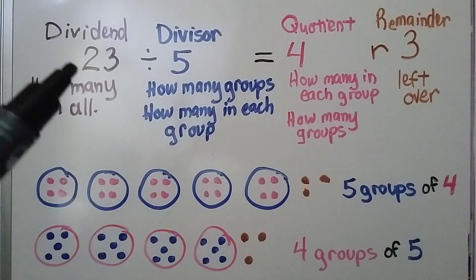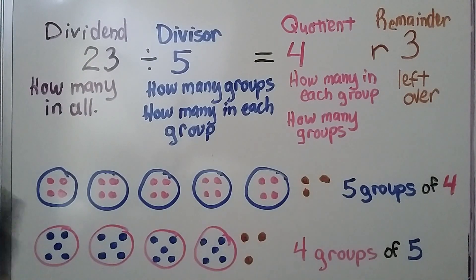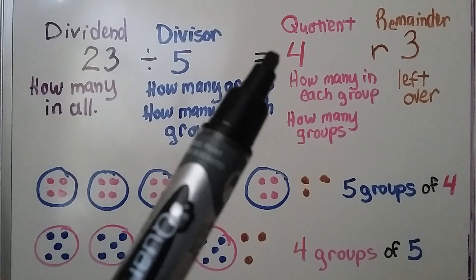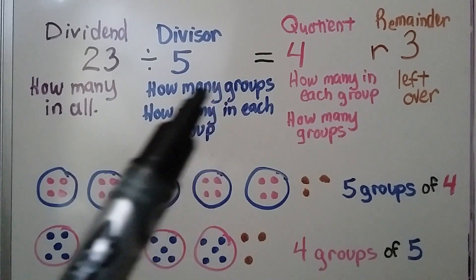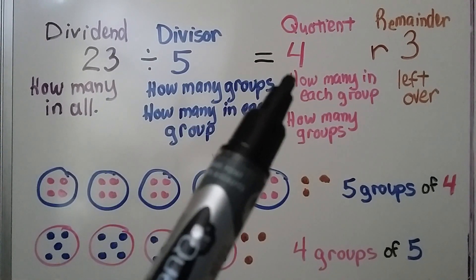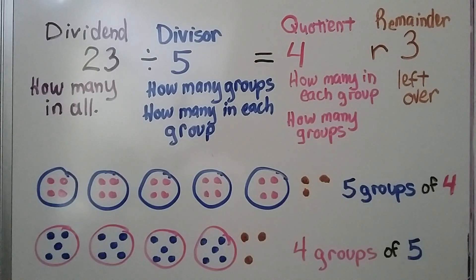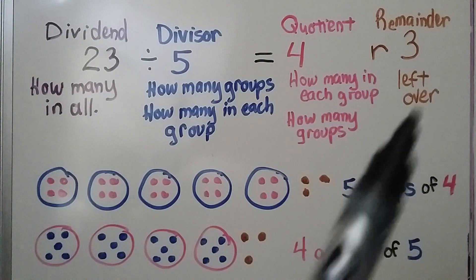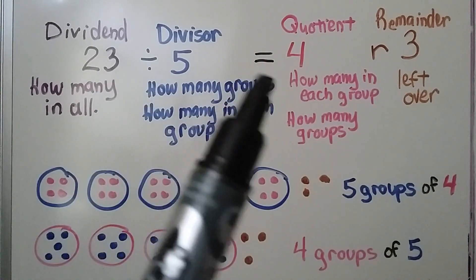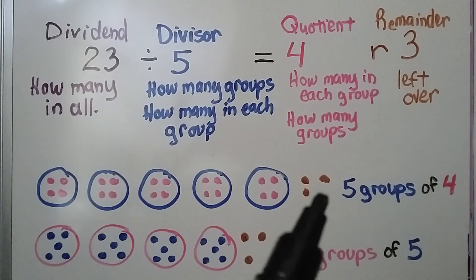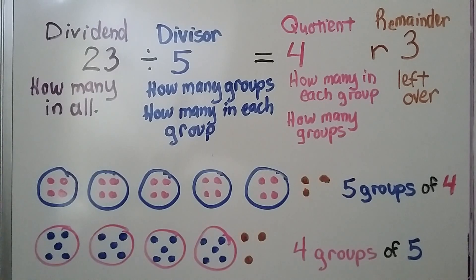So remember, this is the dividend - it's how many in all. This would be the divisor - it's how many groups or how many in each group. Then we would have the quotient. If the divisor is how many groups we have, then the quotient would be how many in each group. If the divisor is how many in each group, then the quotient would be how many groups. Then we have our remainder, it's our leftover. So 23 divided by 5 is equal to 4 with 3 left over. We have 5 groups of 4 with 3 left over, or 4 groups with 5 in them with 3 left over.